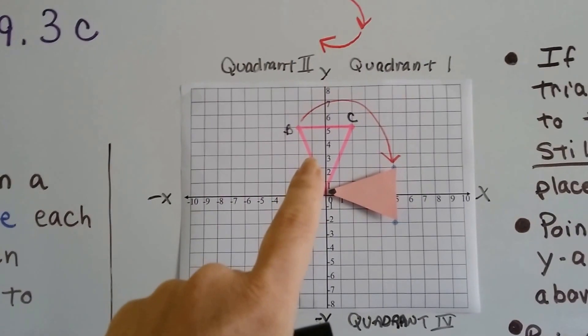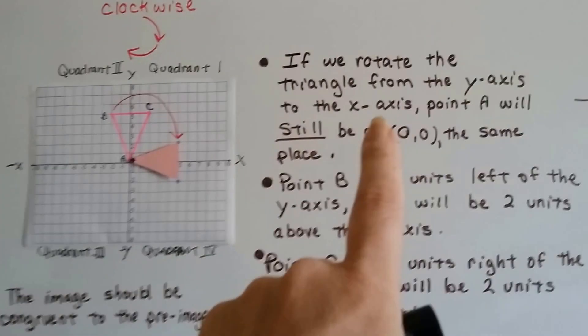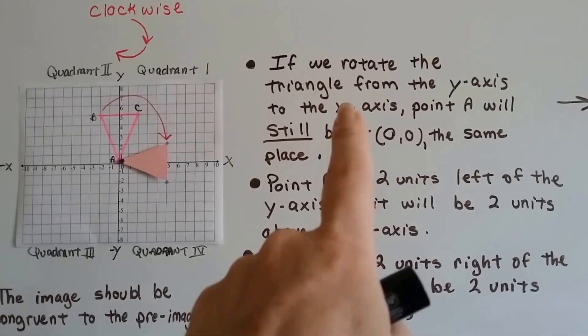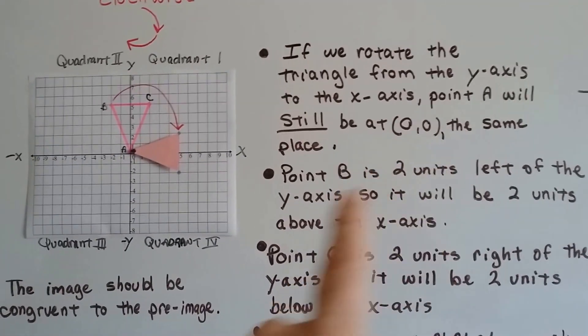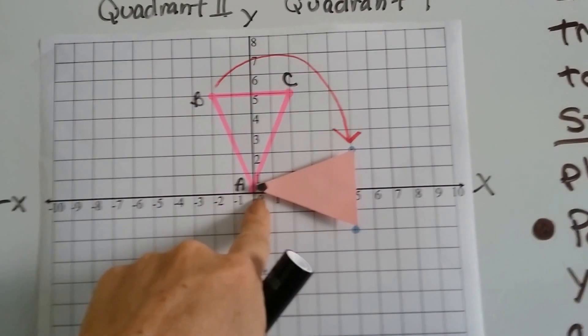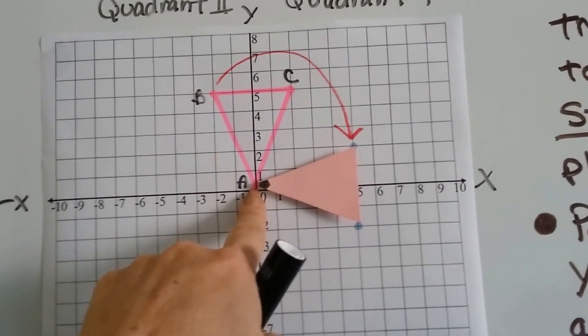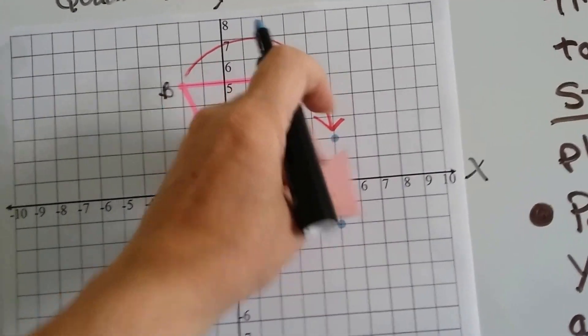So, we've got our triangle, and we want to move it. And if we rotate the triangle from the y-axis to the x-axis, point A will still be at 00, the origin. So, we can label these points. This black tip is going to be A prime. It's going to be the next point.